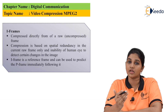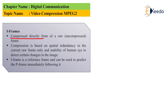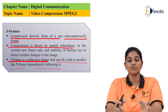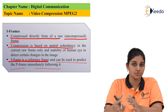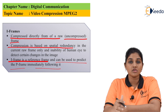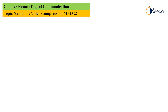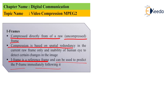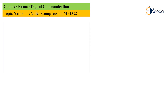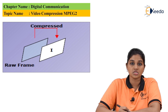The I-frame is compressed directly from the raw uncompressed frame. The compression is based on spatial redundancy in the current raw frame only, and on the inability of the human eye to detect certain changes in the image. The I-frame acts as a reference frame and can be used to predict the P-frame immediately following it. This is how the I-frame looks: it is obtained from an uncompressed raw frame and consists only of that raw frame data.